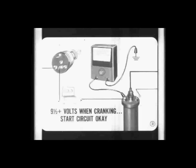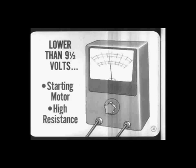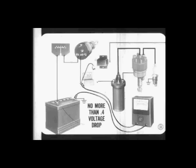If the battery is charged and voltage at the ignition switch side of the ignition coil is nine and a half volts or higher when cranking the engine, the start part of the ignition circuit is okay. If cranking voltage is lower than nine and a half volts, the trouble is probably in the starting motor or it is high resistance in the primary ignition circuit. To check for resistance between the battery and the ballast resistor, connect a voltmeter across the circuit from the battery to the ignition switch end of the ballast resistor. Also, disconnect the voltage regulator lead to eliminate current flow in that circuit. With ignition on and points closed, the voltage drop shouldn't be more than about four tenths of a volt.